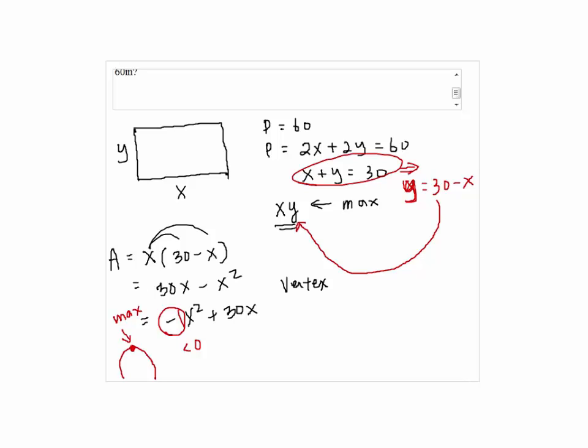So the vertex, which is given by x equals negative b over 2a, is negative b, which is 30, over 2 times negative 1. So the answer will be 15 for x.